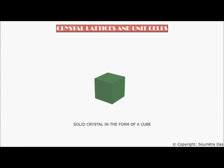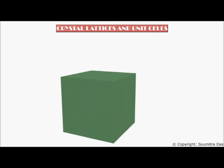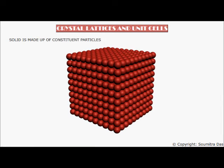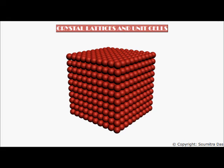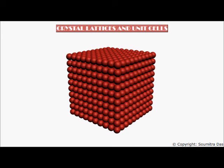Let's take a solid crystal in the form of a cube. If we look at the crystal very closely, we can see that the solid is made up of constituent particles, which may be an atom or an ion or even a molecule. These constituent particles are assumed to be spherical in shape. The constituent particles are arranged in a regular and repeating pattern, filling up the crystal space and closely packed such that a sphere will always touch another sphere nearest to it.